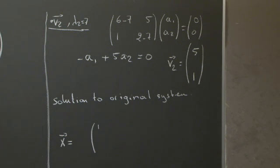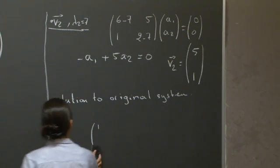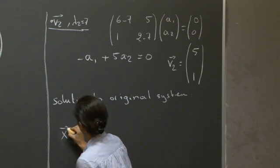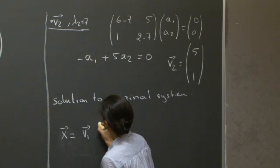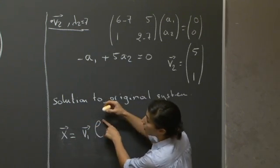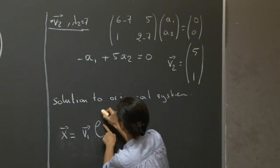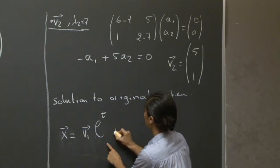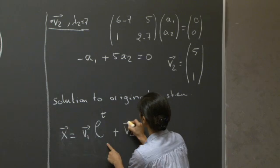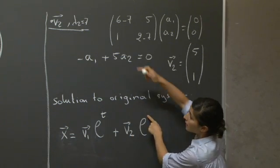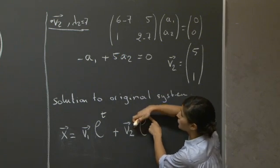The first vector, I'll keep it as v1, v2, that way you see it, and then I'll go into the components. We'd have v1 exponential of the value of lambda we found that corresponds to v1, so it would be 1 times t. And then v2 exponential of the lambda value that corresponds to v2, which is 7t.